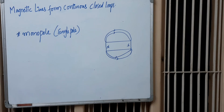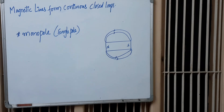As we have seen in the diagram given on the board, if we have taken a bar magnet and drawn the mapping of magnetic lines of force, we see there are loops starting from north to south. The question asks why these continuous closed loops are formed.